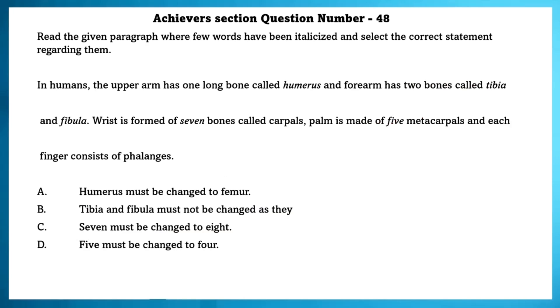Achieve section question number 48. Read the given paragraph where few words have been italicized. Select the correct statement regarding them. In the humans, the upper bone has one long bone called humerus and forearm has two bones called tibia and fibula. This is wrong. It is called radius and ulna. Wrist is formed of eight bones called carpals. Palm is made up of five metacarpals and each finger containing of phalanges. Seven must be eight.